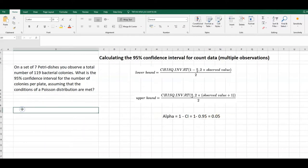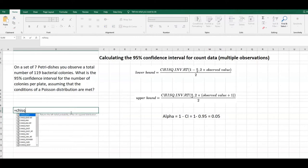Now let's calculate the confidence for the total number. We start with CHISQ.INV. As we type, Excel comes up with some suggestions. What we want is CHISQ.INV.RT. Now we need to put in the first argument: 1 minus alpha half, 1 minus 0.05 divided by 2. Then comma, 2 times our observed value, which is 119.